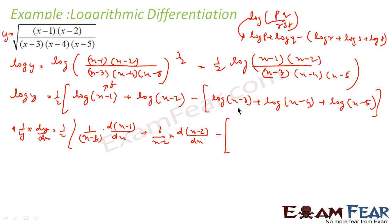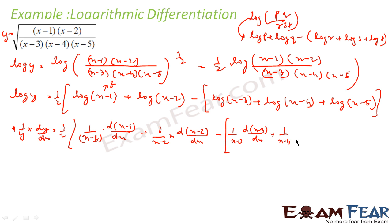Minus: log(x minus 3) becomes 1 by (x minus 3) times d(x minus 3) by dx. Plus this becomes 1 by (x minus 4) times d(x minus 4) by dx.